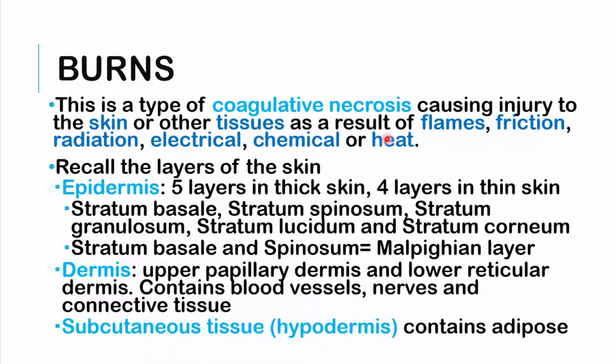The skin is divided into three histological layers. The epidermis consists of five layers in thick skin, which is found on the palms of your hands and soles of your feet. Thin skin, found everywhere else, has four layers. The layers of the epidermis are: stratum basale, stratum spinosum, stratum granulosum, stratum lucidum, and stratum corneum.